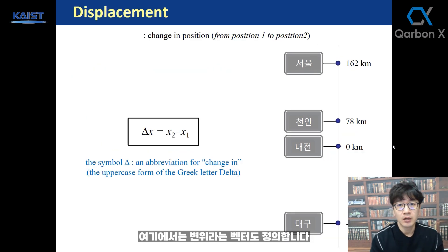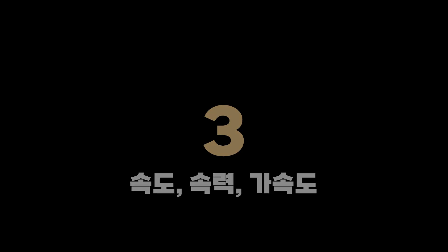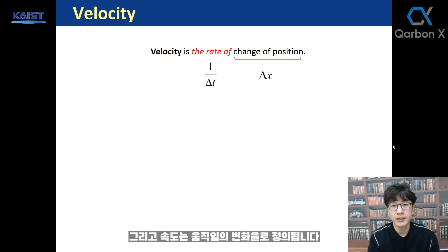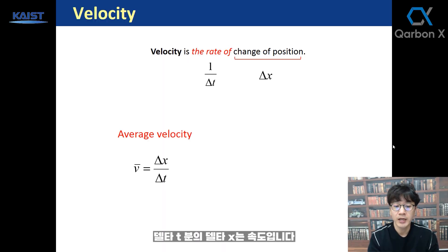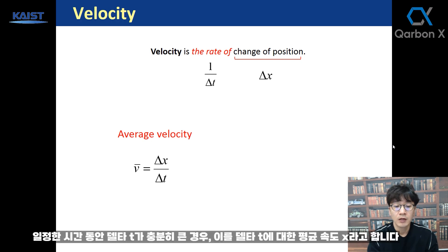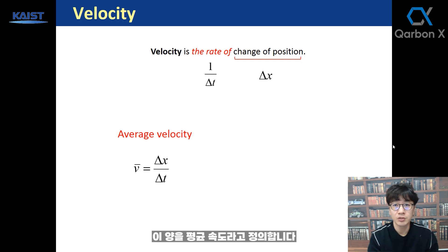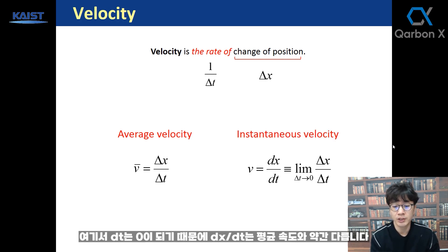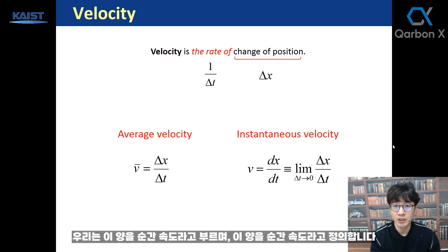If you know position as a function of time, then you know the motion. We also define a vector called displacement. Velocity is defined as the rate of change of motion — delta x over delta t. When delta t is a finite time interval, we call delta x over delta t the average velocity. When dt goes to zero, we call this quantity instantaneous velocity.